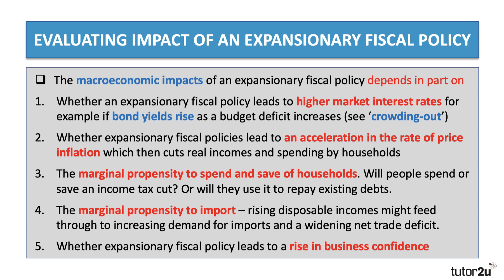Third, the impact depends on the marginal propensity to spend and save of households. If you give people a tax cut, will they choose to spend or save it — or use it to repay existing debt? If they choose to save, the impact of the fiscal multiplier is lower. Fourth, the impact depends on the marginal propensity to import. If the government cuts taxes and disposable income rises, are people spending on domestically produced goods and services, or will that cause a rise in imports and an increasing net trade deficit, which has negative effects for aggregate demand? Fifth, whether the expansionary policy leads to an improvement in both consumer and, in particular, business confidence — will businesses feel the economy is moving forward and fast-forward their own investment and employment plans?